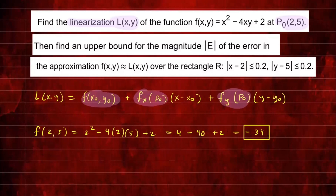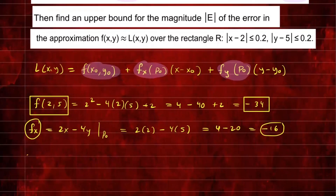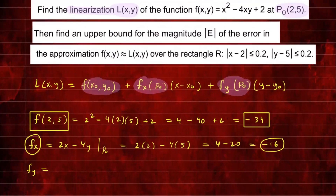Now we'll compute the partial derivatives. The partial of f with respect to x is 2x - 4y. Evaluating at P₀ = (2, 5), we get 2(2) - 4(5) = 4 - 20 = -16. Then the partial of f with respect to y — going back to the original function — gives us -4x. Evaluating at P₀, that's -4(2) = -8. So we have everything we need for our tangent plane.